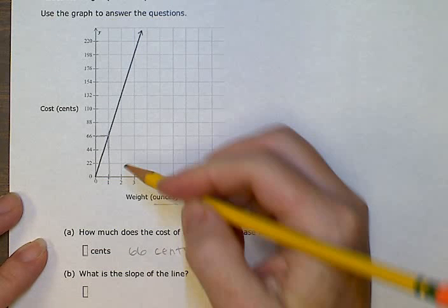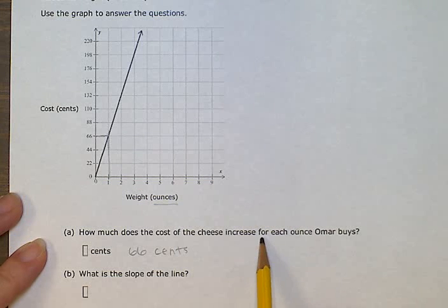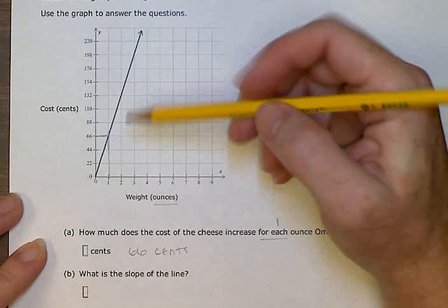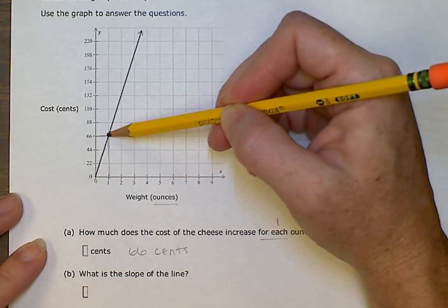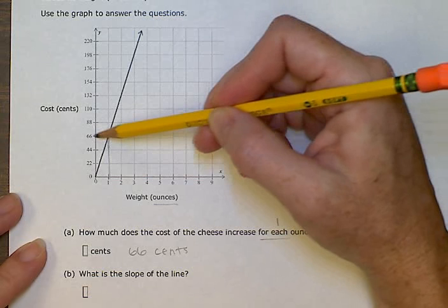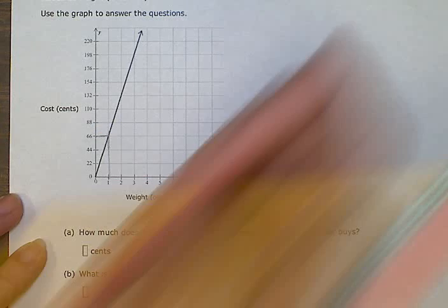So I found that by looking at how much it weighed for one ounce, right? For each ounce means one. And I followed this up until I found where the graph crossed one. And I went over this way and looked to see what number was over there. That was sixty-six. That's how I found that answer.